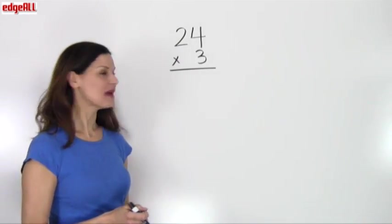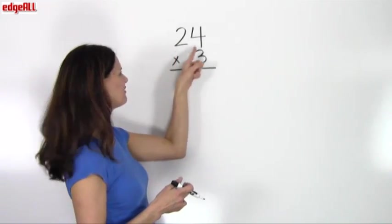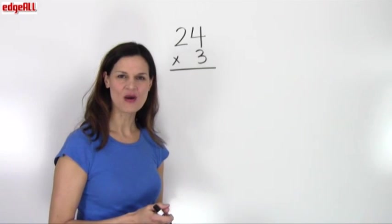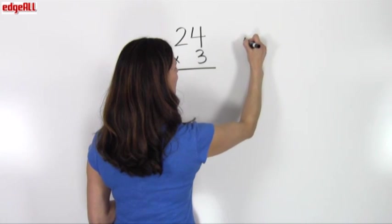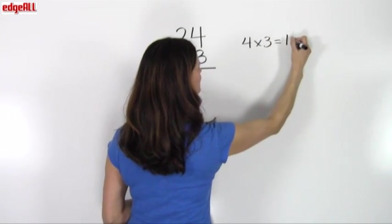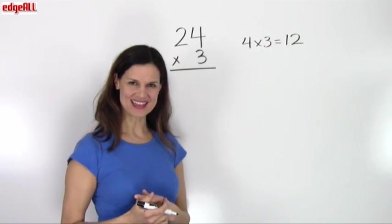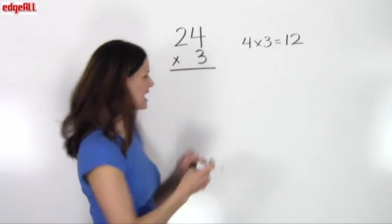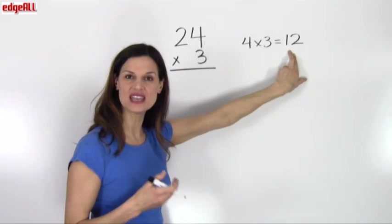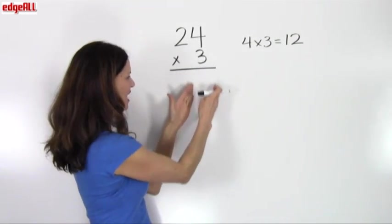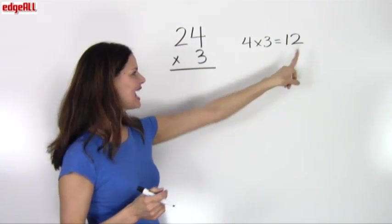I start by multiplying the 3 by the digit that's in the ones place in my 24. So 3 times 4, or 4 times 3, equals 12. I've got 4 times 3 equals 12 as the answer to my first step. The problem is that I need to write that answer into the ones place, but since the answer is a two-digit number, there's not room in my ones place to write the answer.